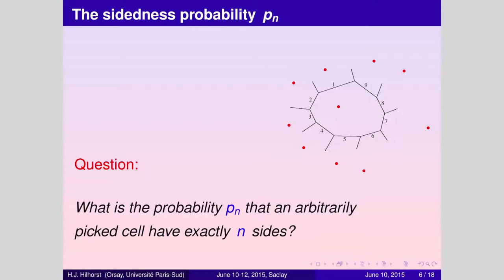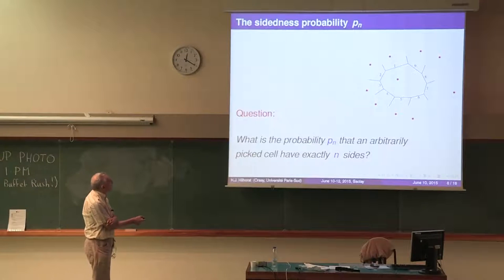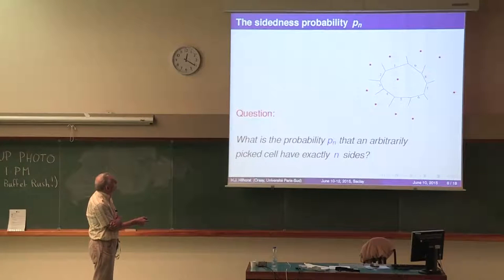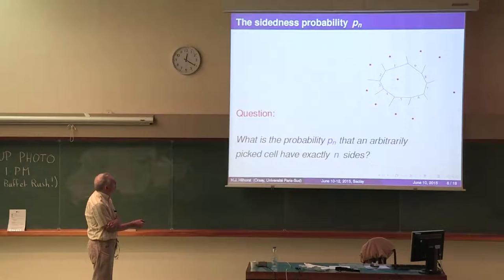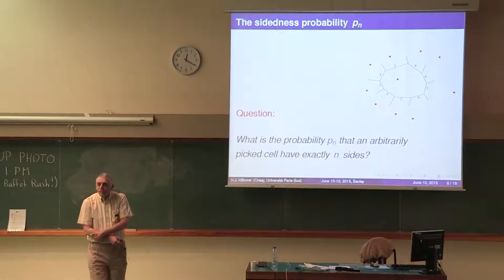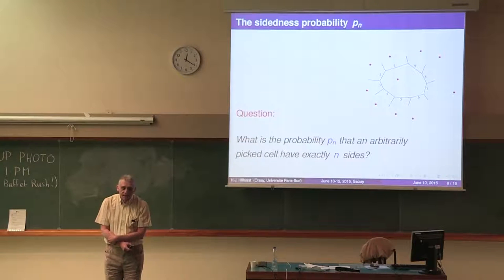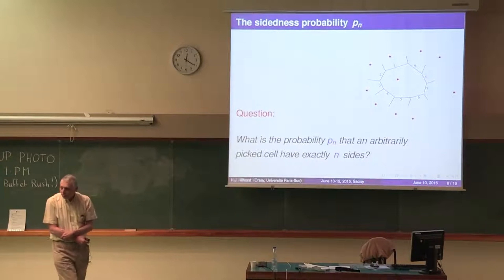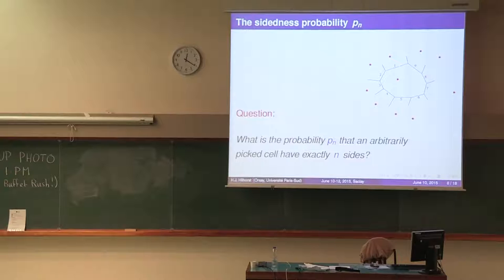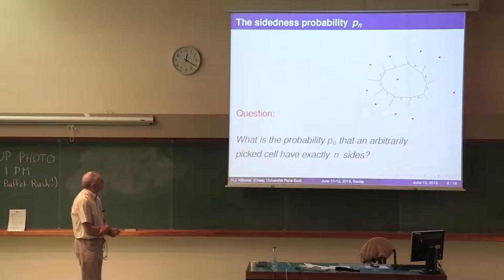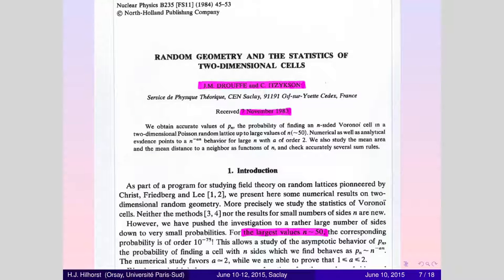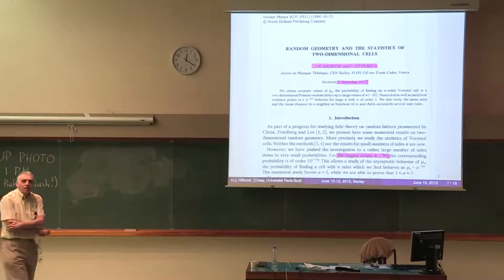Now, I will ask a question: What is the probability P_n that an arbitrarily picked cell has exactly n sides? You see here a cell that happens to have nine sides and also nine vertices. But the number could be different and the question is what is the probability that it has n sides. That surprisingly simple question has not received an analytic answer and we still don't have it today. The question has been asked since a long time. In fact, it was asked more than 30 years ago by Jean-Michel Drouffe and Claudine Itzykson in a paper published in Nuclear Physics.